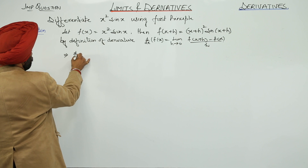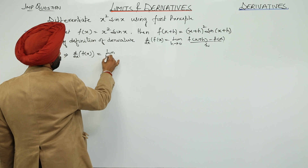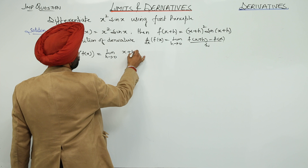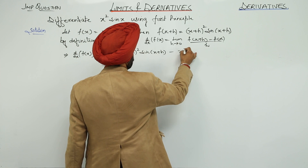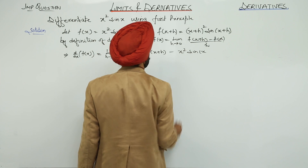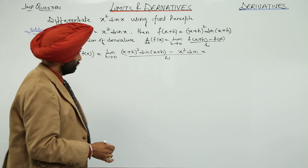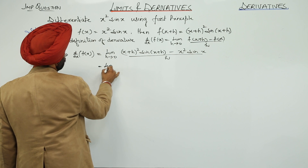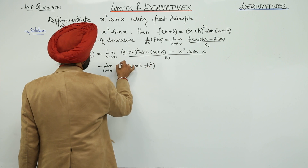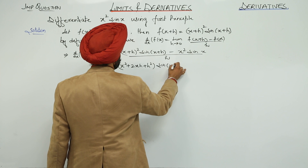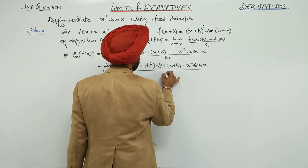So d/dx of f(x) equals limit h approaches to 0, (x + h)² sin(x + h) minus x² sin x, all upon h. Expanding (x + h)², this becomes limit h approaches to 0, x² + 2xh + h² times sin(x + h) minus x² sin x, upon h.